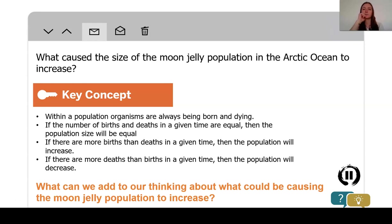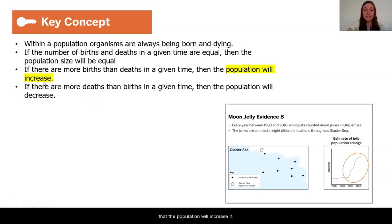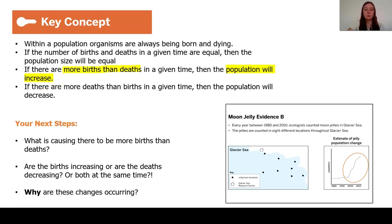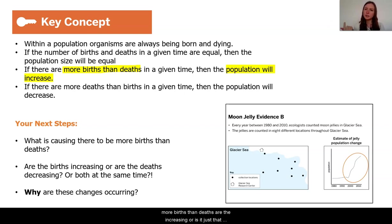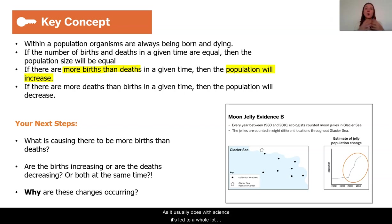The population will increase if there are more births than deaths. What this tells me is that there must be more births than deaths in the moon jelly population. Now what does this really mean? What is causing there to be more births than deaths? Are the births increasing, or is it just that deaths in the moon jellies are decreasing, or are both happening at the same time? Why are these changes occurring? What was happening in the ecosystem where the moon jellies live for these changes to suddenly start occurring in 2000? We need to keep investigating and collecting evidence, because although we figured one part out, as it usually does with science, it's led to a whole lot more other questions.